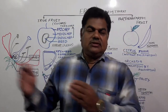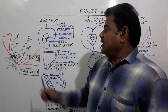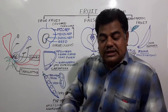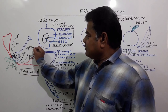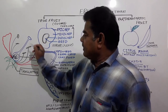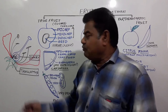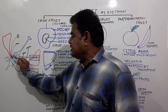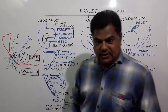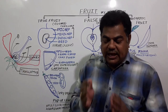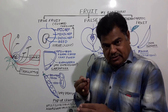All these things we have seen in a previous video. Now in this flower one process takes place: pollination — the transfer of pollen grains from the mature anther lobe to the receptive stigma. Then after pollination, pollen tube formation takes place, and the pollen tube enters the embryo sac where fertilization takes place. After fertilization, from the primary endosperm nucleus, endosperm formation takes place.